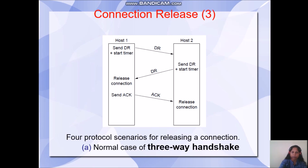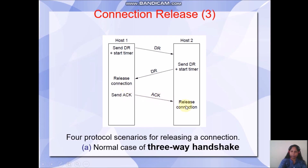To overcome this problem, host1 sends a disconnect request and at the same time starts a timer. Host2, upon receiving the DR, sends an acknowledgement DR, and host2 also starts a timer. On receiving the disconnect request acknowledgement from host2, host1 releases the connection. Then host1 replies with an acknowledgement, and host2 on receiving it releases the connection. This is the normal case of three-way handshake method of releasing a connection.